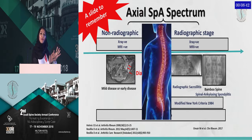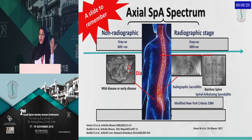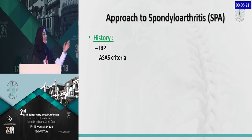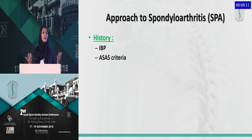The beauty of the ASAS criteria is that you can diagnose non-radiographic findings of the SI joint before vertebral involvement appears on MRI or X-ray of the sacroiliac joint and vertebrae. How to approach this? As in medical school: history and physical examination. History should look for the inflammatory back pain.